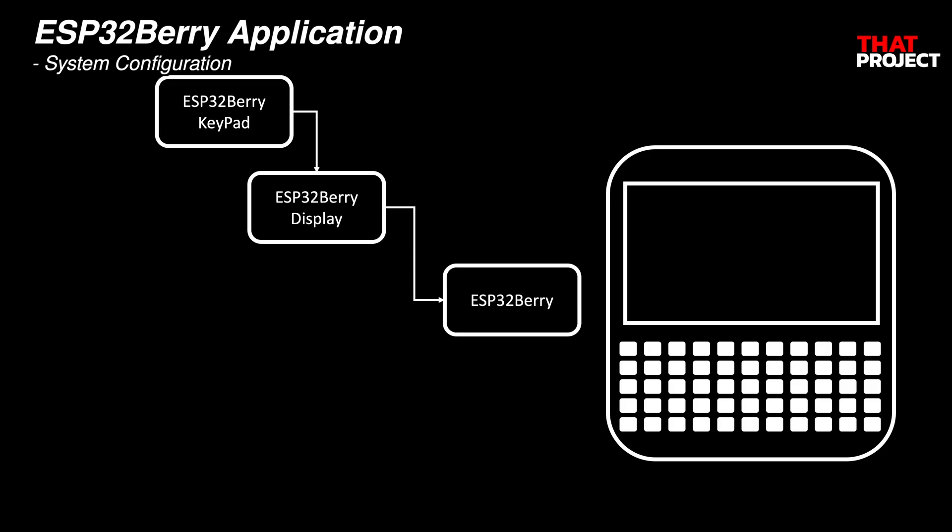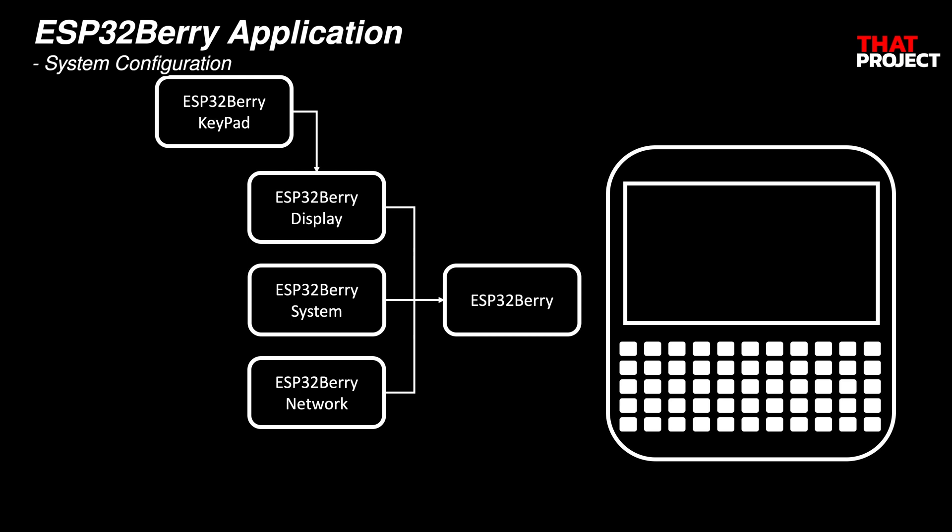This is the system I have configured. Whenever a hardware key is pressed from the keypad class, it finds out which key is triggered and calls it back to the display object. In the display class, LovyanGFX is used as the graphics driver and LVGL version 8 is used. All basic screen UI configuration is done here. The system class implements the current local time and functions to access the SD card. In the network class, there are two tasks for searching and connecting to Wi-Fi. Finally, the Simple Note app is implemented through the app note class.